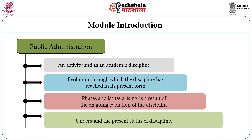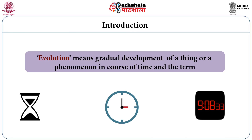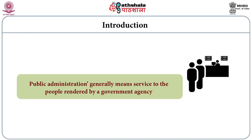In this entire module, we will try to understand how public administration has reached its status as a discipline in the social sciences. Evolution means the gradual development of a thing or a phenomenon in course of time. Public administration in general means serving the people through government agencies, or we can say that public administration deals with the delivery of services to the people through government agencies.